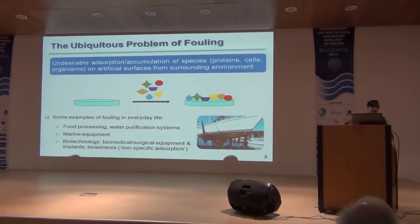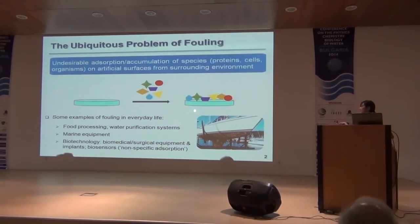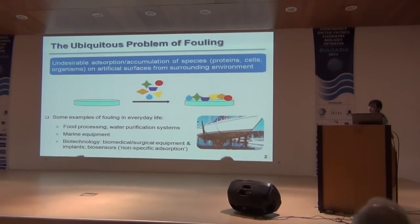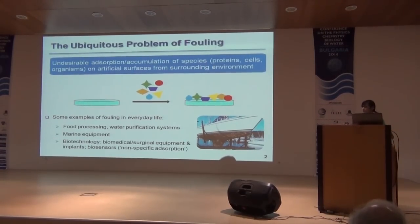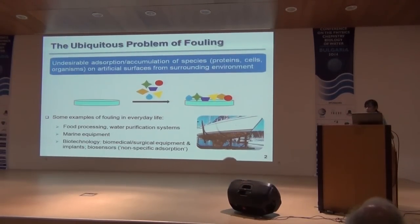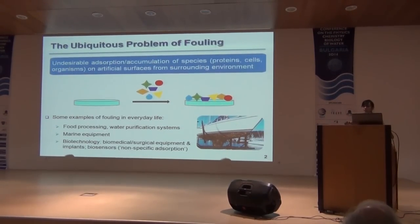So what is fouling? A very general and simplistic schematic representation is shown here, but basically what it is is the undesirable absorption or accumulation of species — they could be bacteria, cells, organisms — onto any artificial surface from the surrounding environment. We see fouling in our everyday life; it's pretty much present everywhere and it causes major problems in various industries.